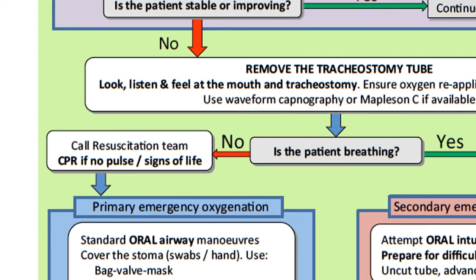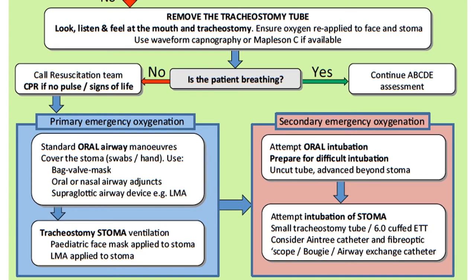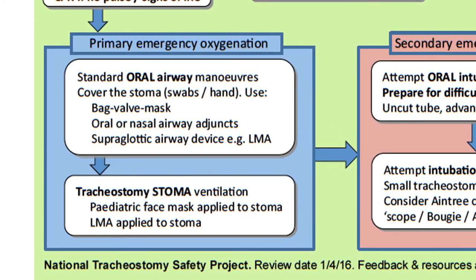The final section of the algorithm deals with emergency oxygenation — this is when you have removed the tracheostomy tube and there are still no signs of breathing. In this situation, you move to your primary emergency oxygenation strategies via the oral nasal route or the tracheostomy stoma. If trying via the oral nasal route, apply standard oral airway manoeuvres — head tilt, chin lift or jaw thrust — making sure to cover the stoma, then try to ventilate using a bag valve mask, airway adjuncts or a supraglottic airway. If trying to ventilate via the stoma, place a paediatric face mask or LMA over the stoma and try to ventilate. You may need to close the nose and mouth to occlude the upper airway and prevent any leak.